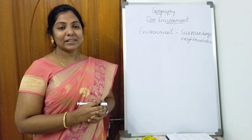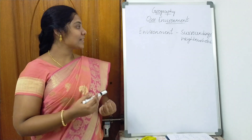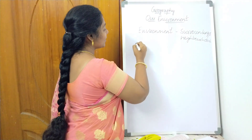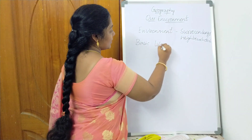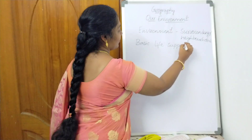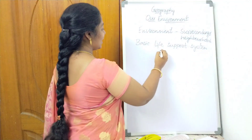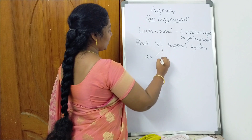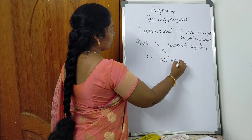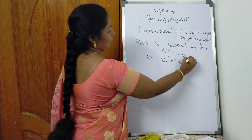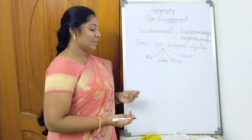What all are included in our surroundings? If we come out of a house, what all the things we can see? We can see plants, we can see animals, we can see buildings, we can see roads. All these come under our environment. Environment is also known as Basic Life Support System. For our livelihood, we need air, we need water, we need plants, we need land to live. So all these come under our environment and this is also called as Basic Life Support System.